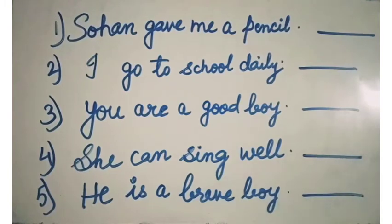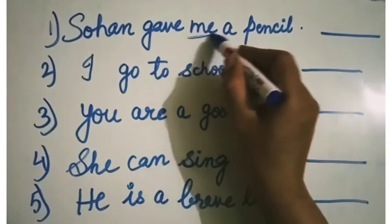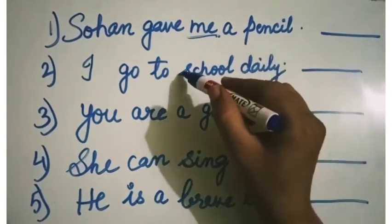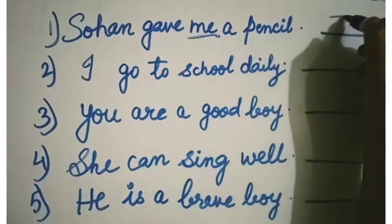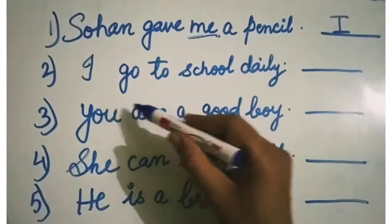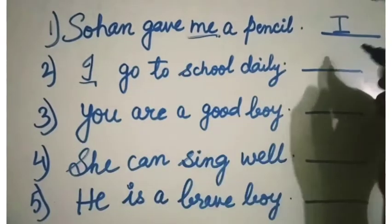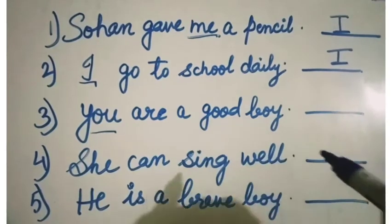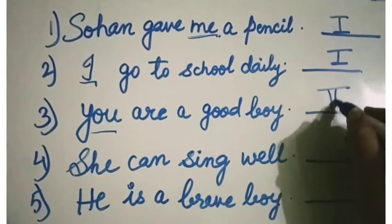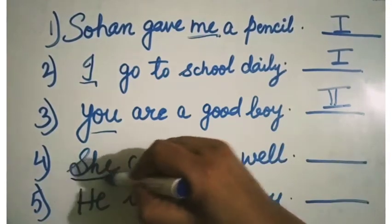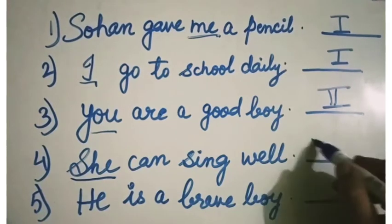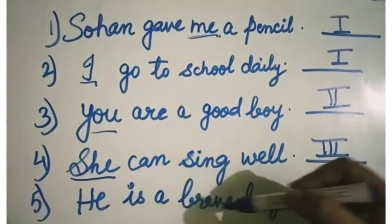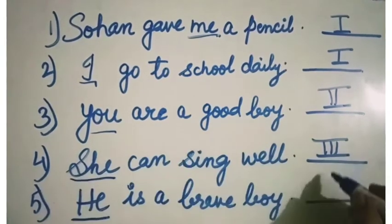Here are some sentences. We will see whether they are first, second, or third person. First sentence: 'Sohan gave me a pencil.' The word 'me' makes this first person. Second sentence: 'You are a good boy.' The word 'you' makes this second person.